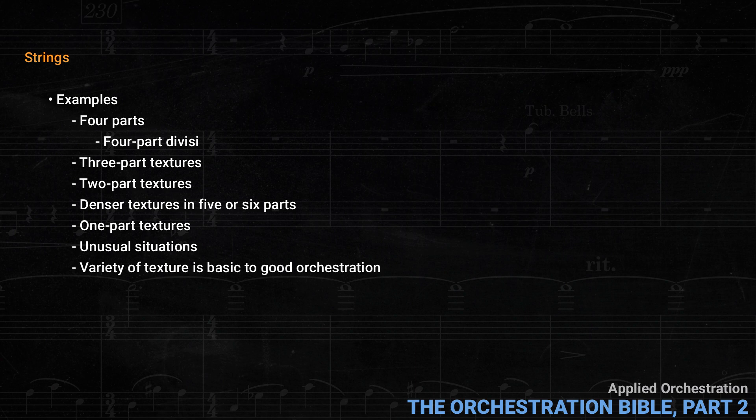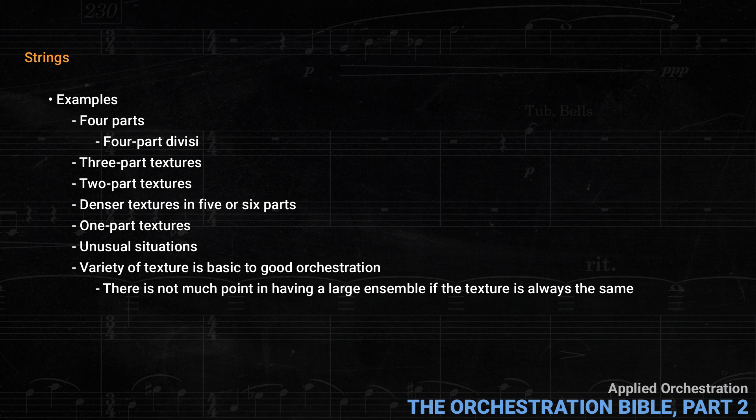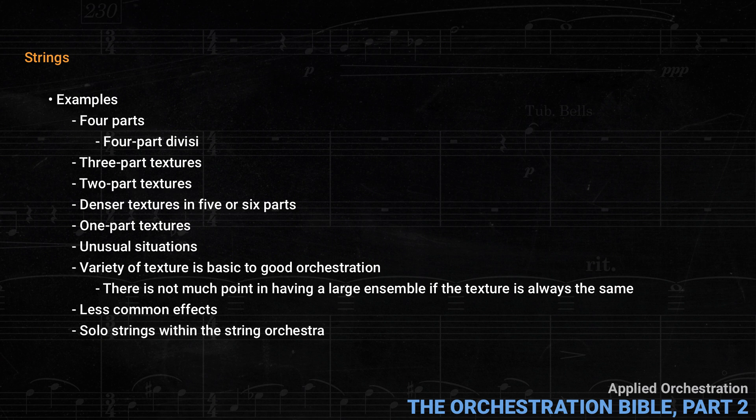This kind of variety of texture is basic to good orchestration. Because most musicians start with four-part harmony for choir, that doesn't mean writing for the orchestra should always be in four parts — quite the contrary, since there isn't much point in having a large ensemble if the texture is always the same. Koechlin then goes into pizzicato, muted strings, harmonics, and other less common effects, and finally discusses the use of solo strings within the string orchestra. As usual, he's aiming at an encyclopedic presentation of what can be done with the strings, not just a list of all possibilities, but examples of the musical character they can produce.